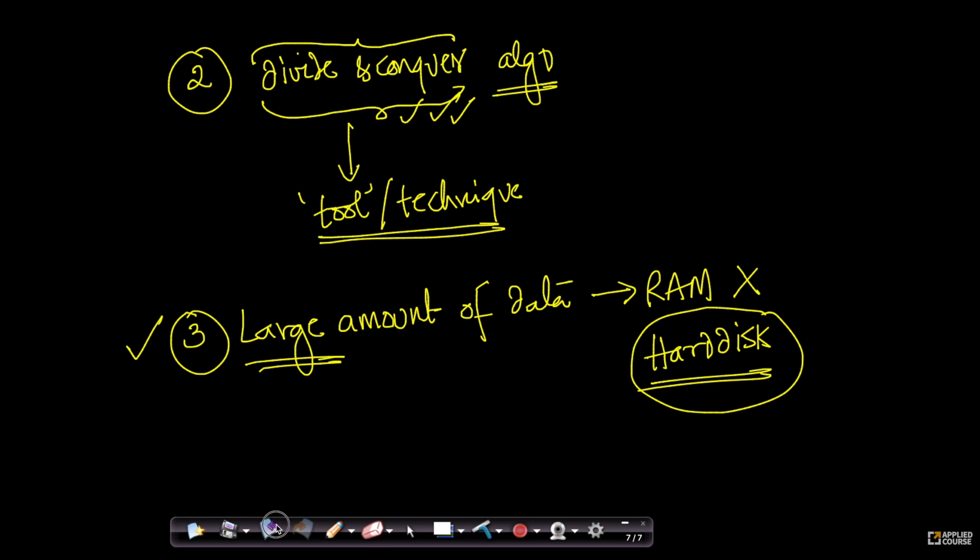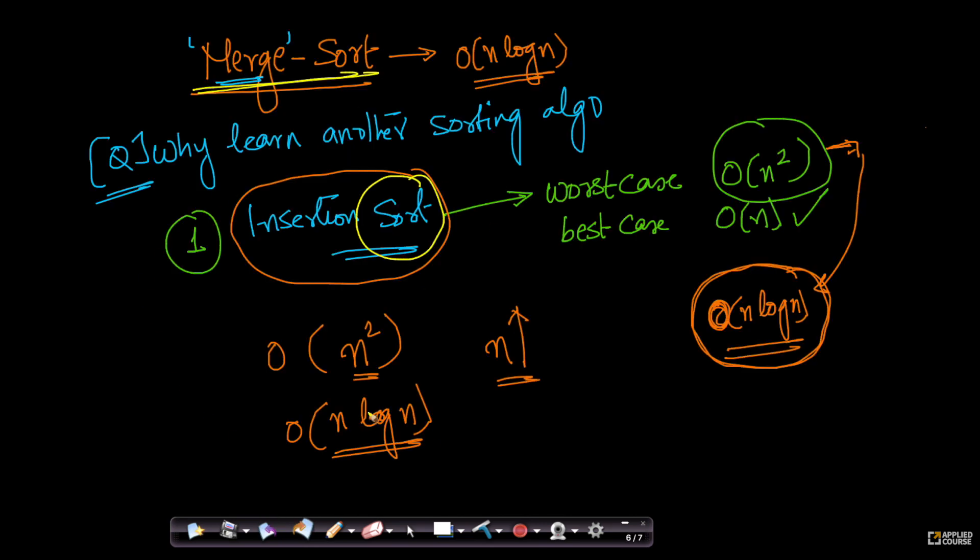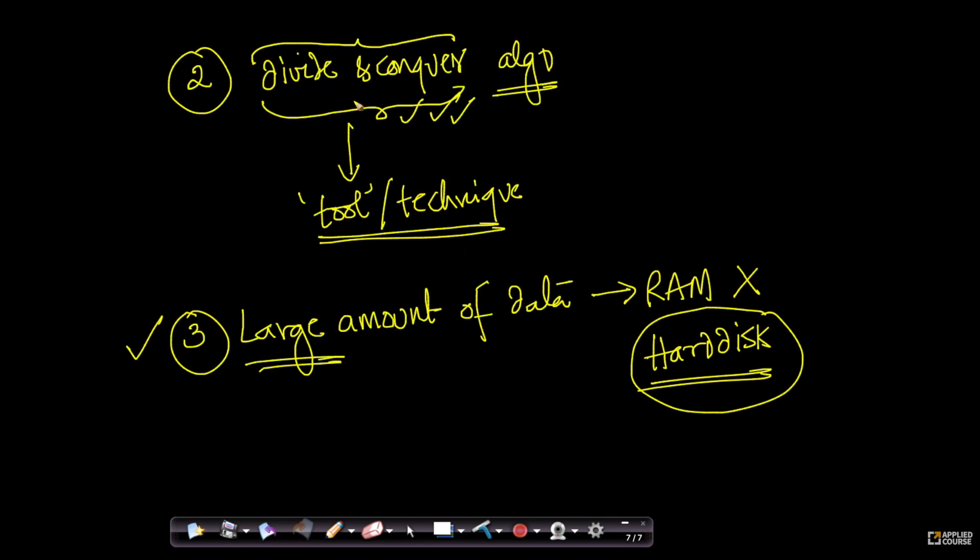The three important reasons why we should learn merge sort: first, from a computational time complexity perspective, merge sort has better worst-case performance than insertion sort, and I will derive and explain all of that. Second, we learn a very interesting strategy called divide and conquer, which is very useful. And we will also show how merge sort works when you have large amounts of data that do not fit into RAM.